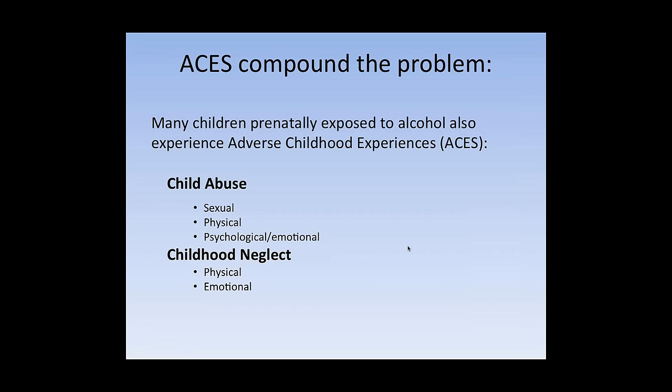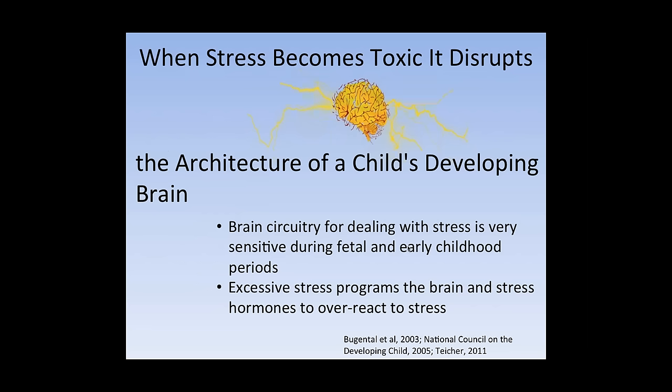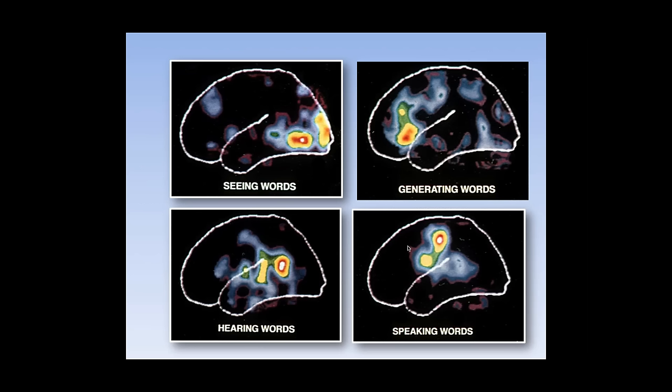Unfortunately, ACEs or adverse childhood experiences often compound the problem. Because many children prenatally exposed to alcohol also experience child abuse, child neglect. And that level of stress adds to the brain damage that happened before pregnancy. When it becomes toxic, it disrupts the architecture of a child's developing brain and affects how they deal with stress. Excessive stress programs the brain and stress hormones to overreact.